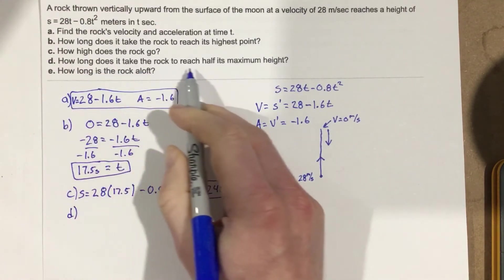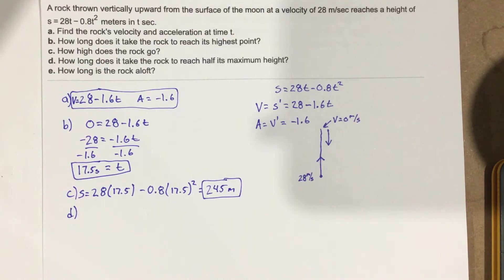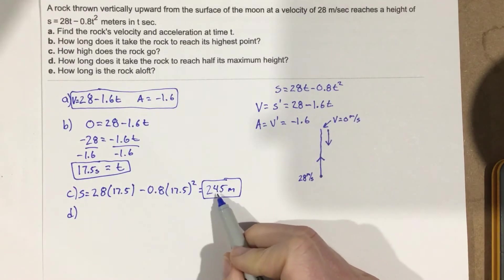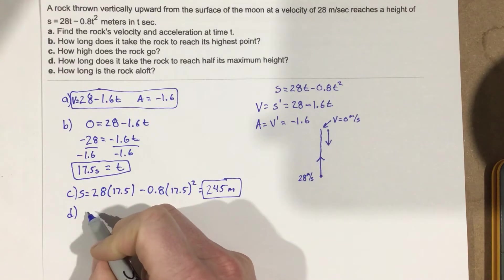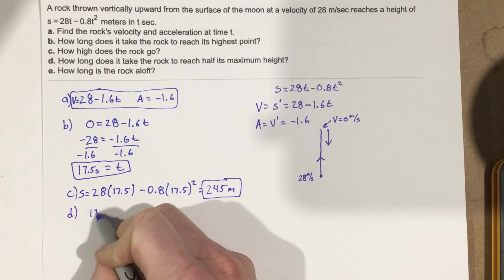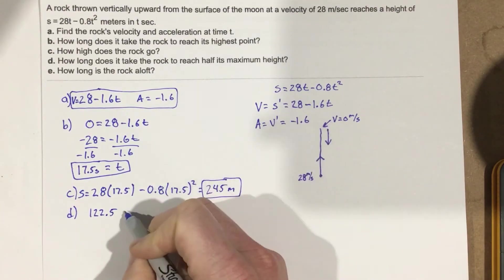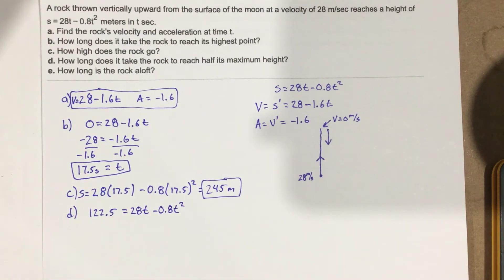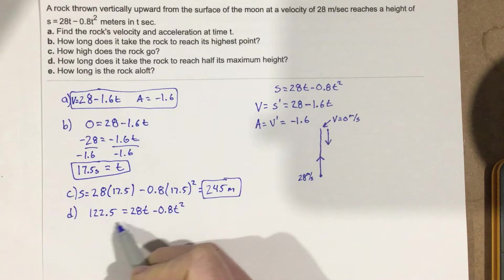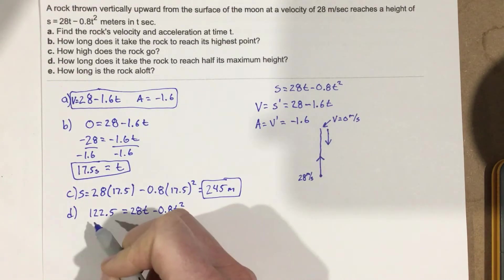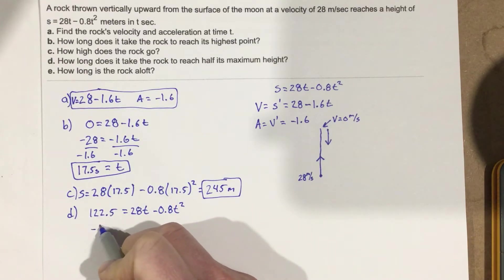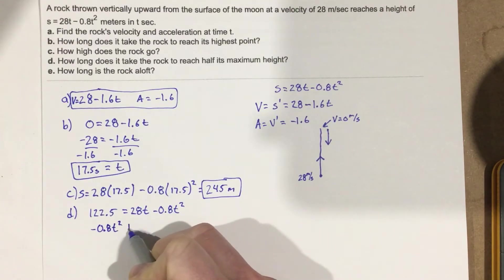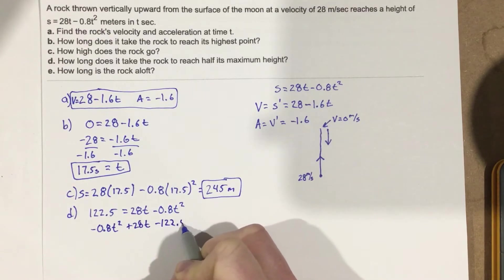Part D: How long does it take the rock to reach half its maximum height? Half of 245 is 122.5. So we want to find the time when s equals 122.5. We set 122.5 equals 28t minus 0.8t squared. Rearranging gives us negative 0.8t squared plus 28t minus 122.5 equals 0.